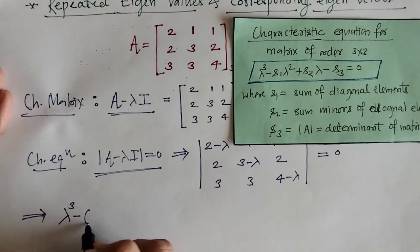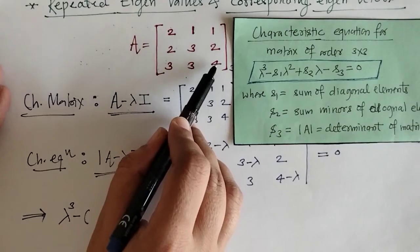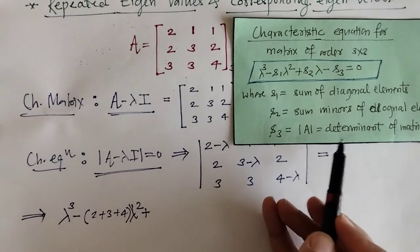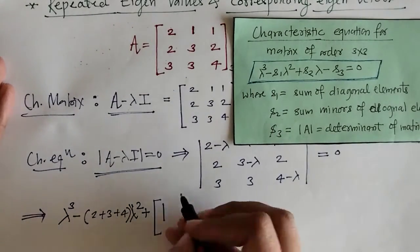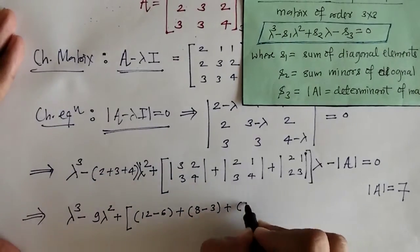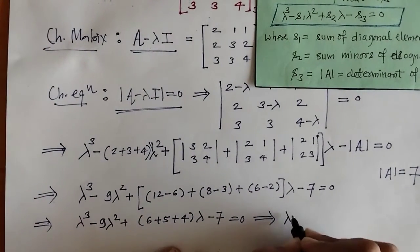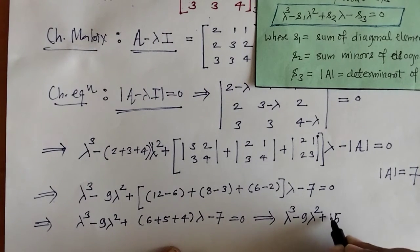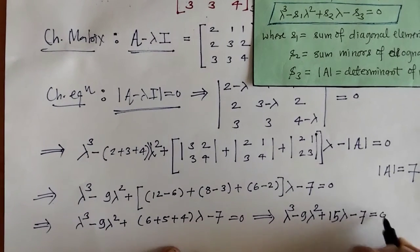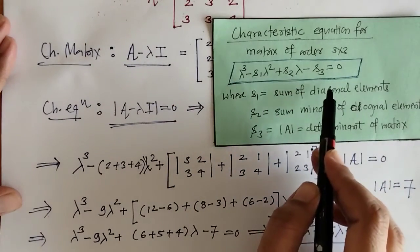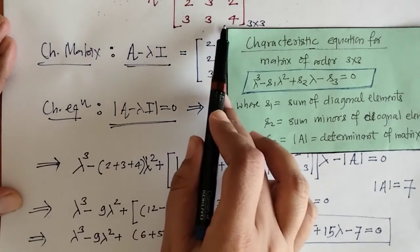S1 is the sum of diagonal elements. S2 is the sum of minors of diagonal elements, and S3 is the determinant of the given matrix. We will put all those values and simplify to get the characteristic equation. We have used this standard result for finding the characteristic equation of a matrix of order 3.